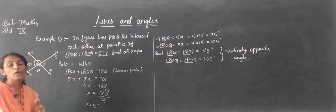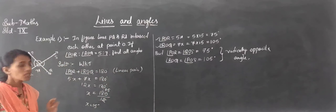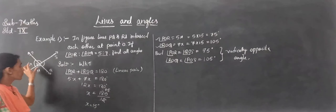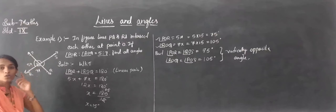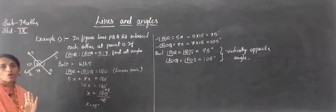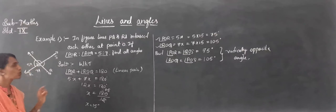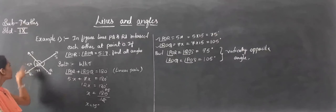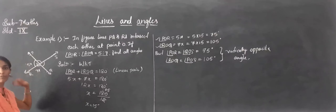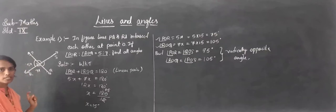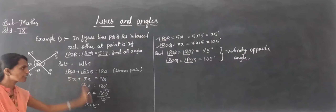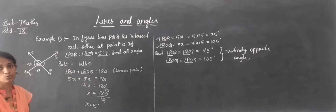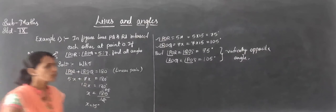Only the ratio of two angles was given. If you know the basic rule that both angles in a linear pair sum to 180 degrees, it is easy to solve this type of example.